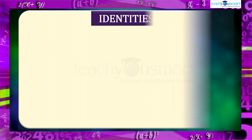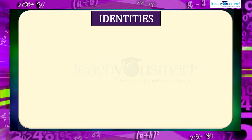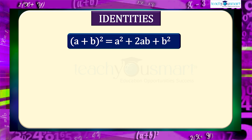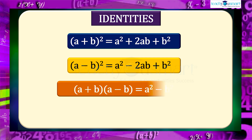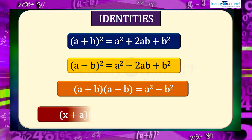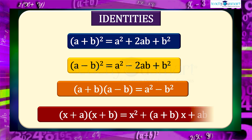Some of the identities we will discuss in this chapter are: (a+b)² = a² + 2ab + b², (a-b)² = a² - 2ab + b², (a+b)(a-b) = a² - b², and (x+a)(x+b) = x² + (a+b)x + ab. We will see the details of these in the coming classes.